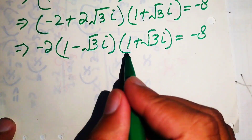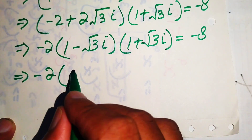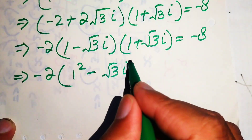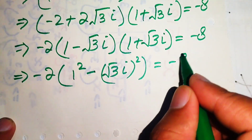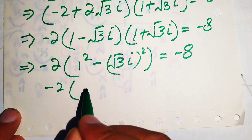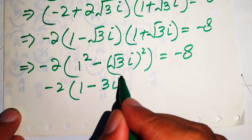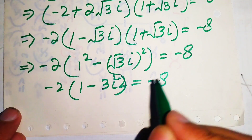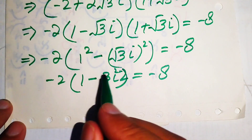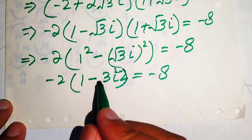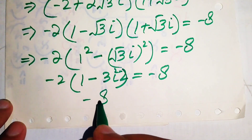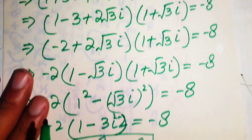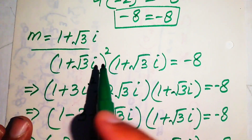This is a difference of squares: (a minus b)(a plus b), giving 1 squared minus (square root of 3 · i) squared equals minus 8. So we get 1 minus 3·i squared equals minus 8. Since i squared equals minus 1, minus minus becomes plus, giving 1 plus 3 equals 4, and 4 times minus 2 equals minus 8. So minus 8 equals minus 8, confirming the second complex solution satisfies the equation.